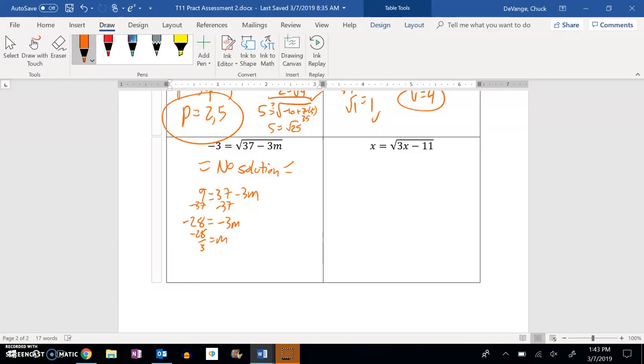And if you try to plug that back in, it's not going to equal negative 3. It's not going to work for you. Let's try it. Does negative 3 equal 37 minus 3 times negative 28 over 3? Negative 3 does not equal the square root.